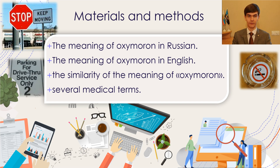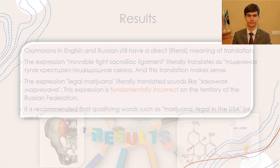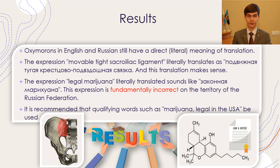We also analyzed several medical terms which contain oxymorons. Two of the most common are the mobile-type sacroiliac ligament and the expression legal marijuana. This substance is recognized as a narcotic by the legislation of the Russian Federation. The study of these concepts shows that although they have the characteristics of an oxymoron, they still have a direct or literal meaning in translation.